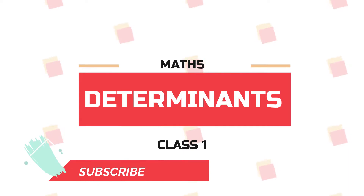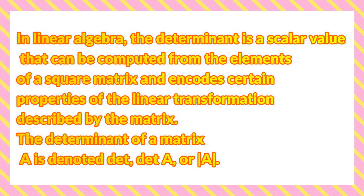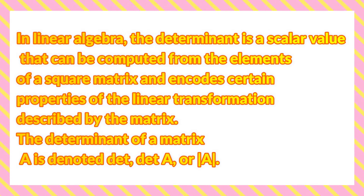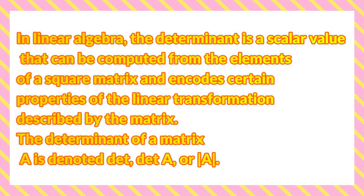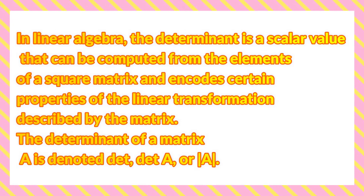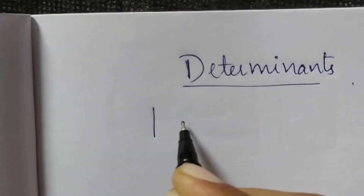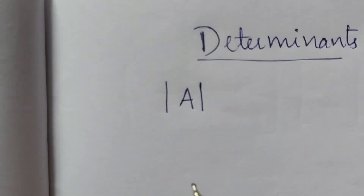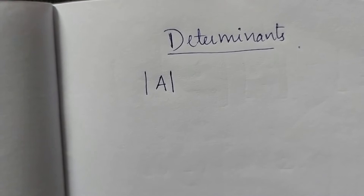We are going to learn about determinants. A determinant is a number. We are going to denote it using two vertical lines. We will define the determinant for a square matrix.